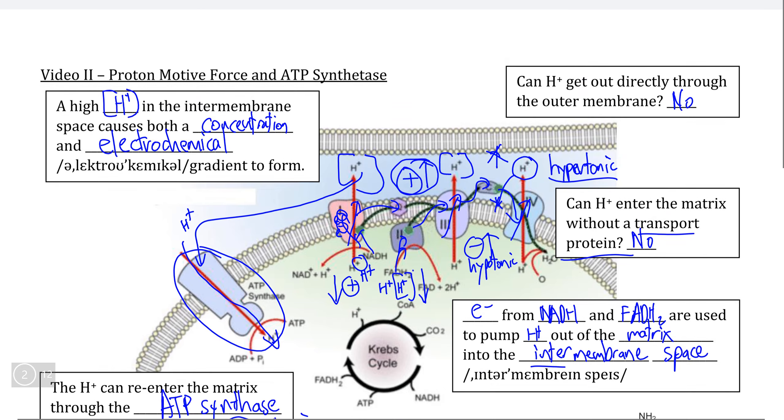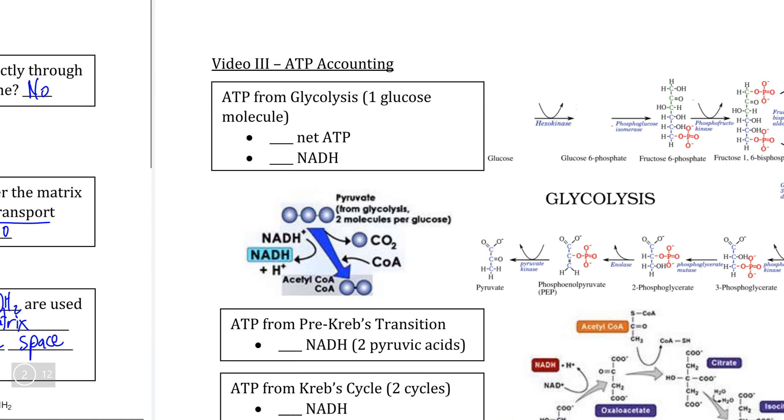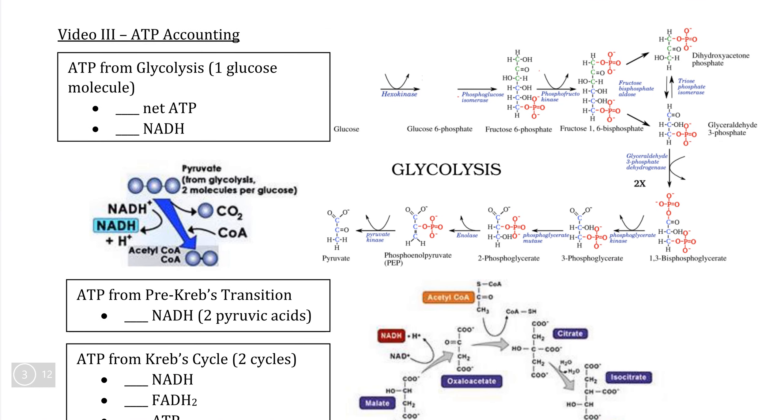In the final video in this series, we're going to do a complete summary of all three of the stages of cellular respiration in order to look at exactly how much ATP we can generate from a single molecule of glucose under ideal circumstances.